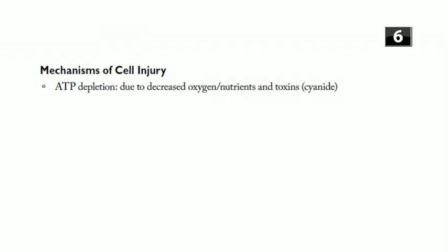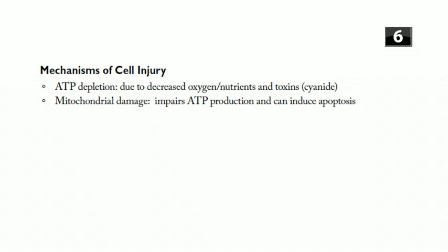The major mechanisms of cell injury include ATP depletion — without ATP nothing works. The main causes are reduced supply of oxygen and nutrients and actions of many types of toxins, like cyanide. Mitochondrial damage is closely related because the mitochondria supply ATP, and damaging them will ultimately impair ATP production.